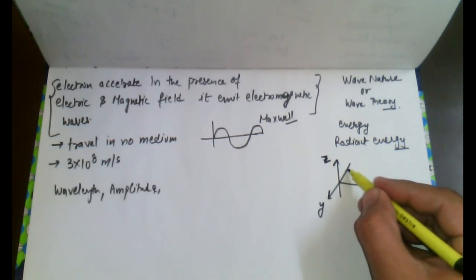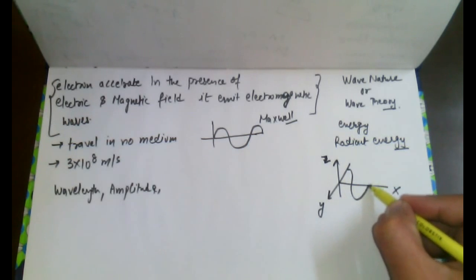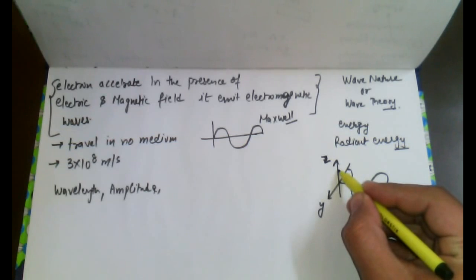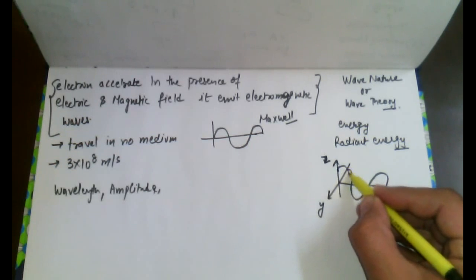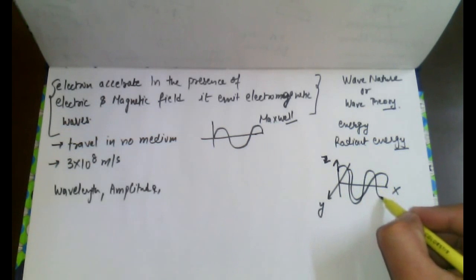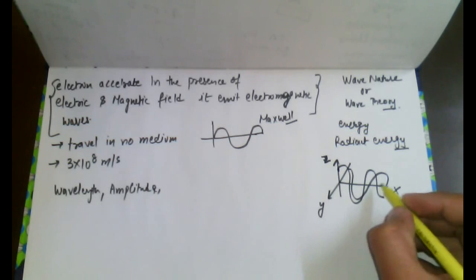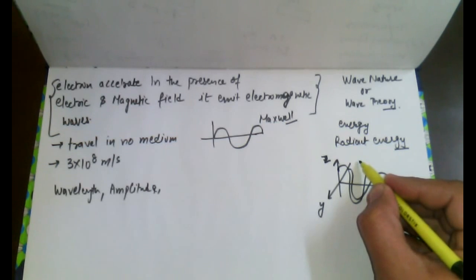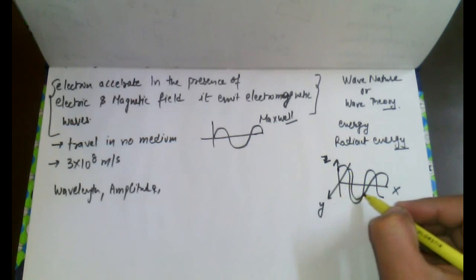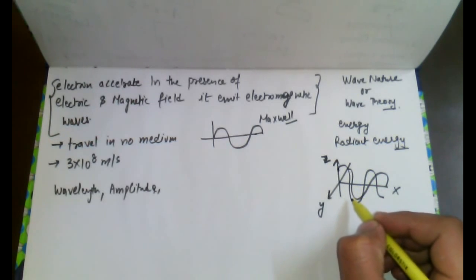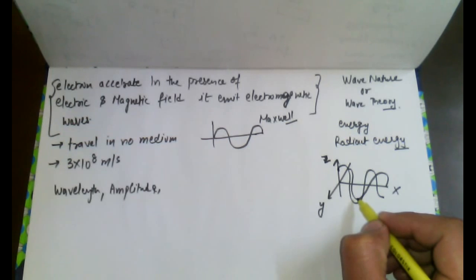Looking at the diagram, we have two fields acting simultaneously — the magnetic field and the electric field. These two are both present simultaneously, so the electron will definitely propagate. When the electron propagates in these two fields, it will emit electromagnetic waves. It may be accelerating in any direction, but it is in the presence of both fields.